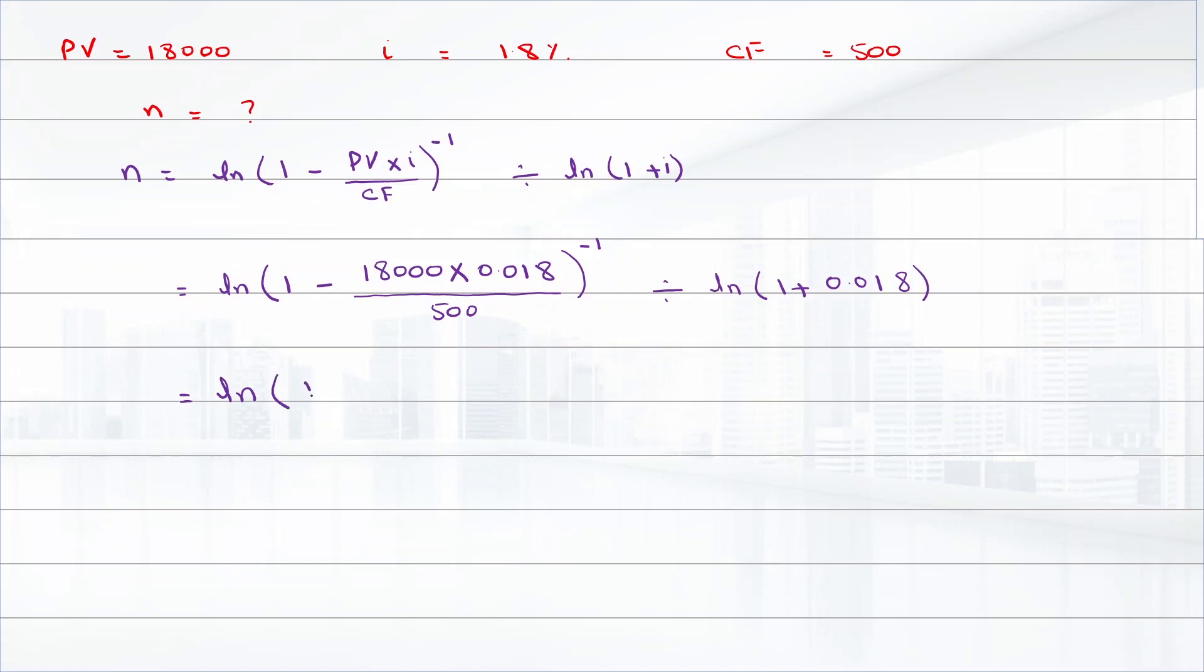That equals log of 1 minus 324 divided by 500, raised to power minus 1, divided by log of 1.018, which equals log of 1 minus 0.648, raised to power minus 1, divided by log of 1.018. This equals 1.0441 divided by 0.01784.